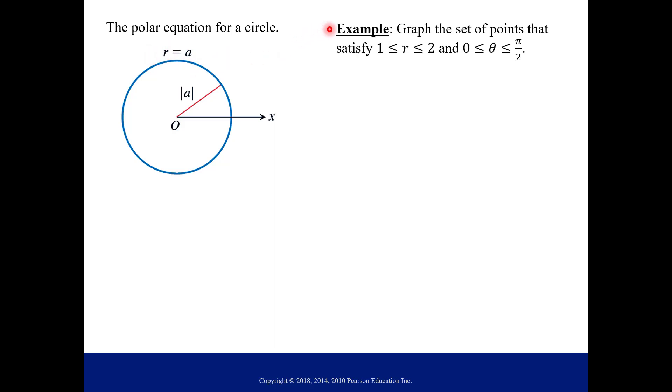So let's look at this example. Graph the set of points that satisfy r is greater than or equal to 1 but less than or equal to 2 and then the angle is between 0 and pi over 2. So if you separate this you can say that you want a circle with radius 1, you want a circle with radius 2, but you want all the points in between. But then you also only want a certain angle measure that you want to sweep out. So let me show you using a graphing website and then we'll jump right back into this.